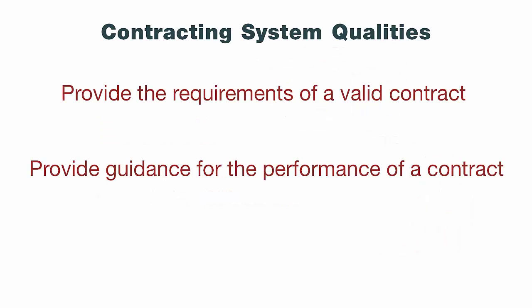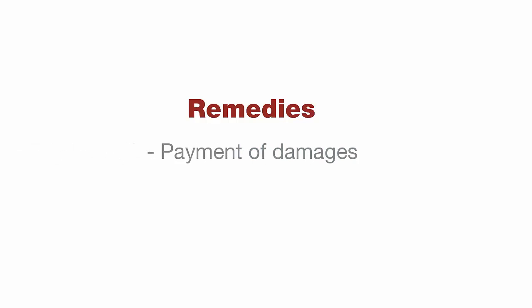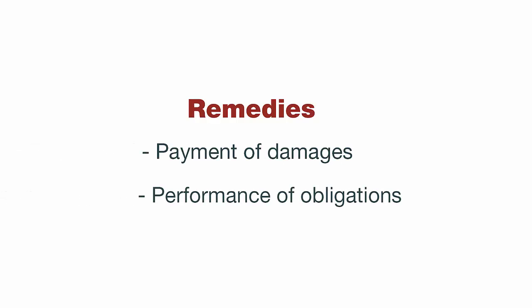Finally, the last thing a contracting system must do is provide remedies for the failure to perform a contract. The contracting system must provide a remedy for the breach of the contract. When a party fails to perform, the contracting system must provide a remedy to the non-breaching party — it's this remedy that gives the contract meaning, because if we have a remedy, then the parties are encouraged to comply with their obligations. These remedies can take different forms: they could be the payment of damages, the performance of obligations under the contract, or a combination of things, depending on the nature of the contract and the relief sought.